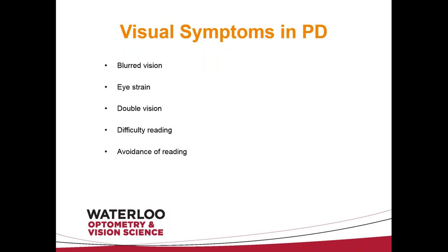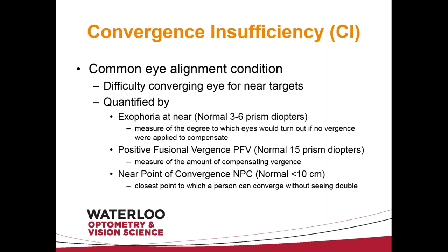To summarize the visual symptoms in Parkinson's disease: blurred vision, eye strain, double vision, and difficulty with reading — and some people don't complain of difficulty reading, they just avoid it entirely, which can have a significant impact on someone's life. There is an eye movement disorder called convergence insufficiency, which involves difficulty converging the eyes for near targets.